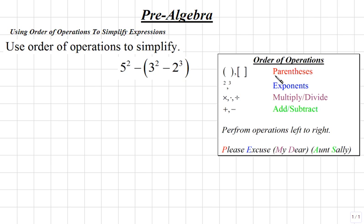We will begin by simplifying within the parentheses. Within the parentheses using order of operations, we'll first simplify exponents. So, writing each stage down, we'll write down 5 squared minus the quantity of...